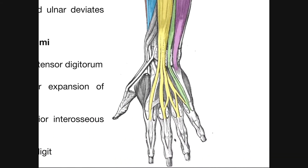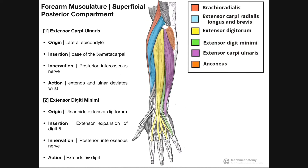The extensor expansions are essentially just fascial coverings that cover the tissue of these digits — you can see those on digits five, four, three, and two. Extensor digiti minimi inserts onto the base of that expansion and has a small communication with extensor digitorum. It's innervated by the posterior interosseous nerve, and because it's inserting on the extensor expansion of the fifth digit, it's going to be able to extend the fifth digit, in particular at the metacarpophalangeal joint — it does not actually extend the wrist.